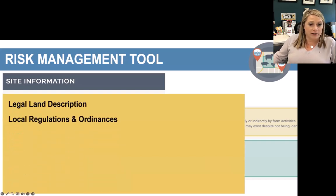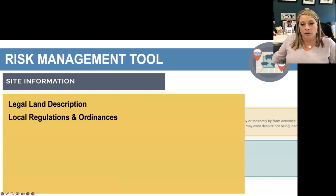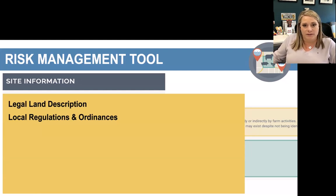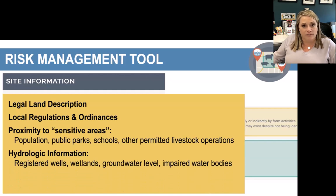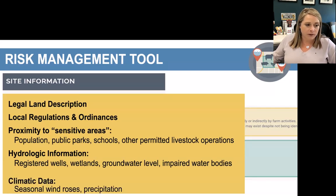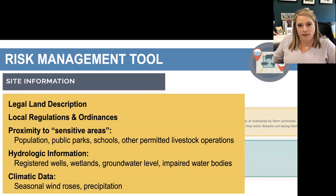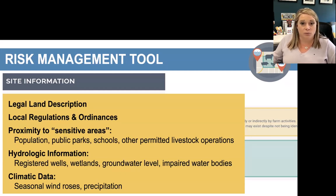Other parts of the report include the legal land description for that parcel, local regulations and ordinances — Nebraska has a lot of planning, zoning, and ordinances in place for livestock operations in certain counties — proximity to sensitive areas like public parks and schools, other permitted livestock operations, hydraulic information such as registered wells, wetlands, impaired water bodies, and all of these considerations for deciding on setback distances. There's also climate data including seasonal wind roses and precipitation, which relate to locating the site to minimize odor risk to neighbors.